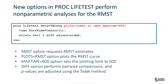In PROC LIFETEST, you can perform RMST analysis by specifying the RMST option in the PROC LIFETEST statement. When there are multiple groups, you can specify the STRATA statement to compute the RMST for each level of the strata variable. In addition to generating the survival plot, you can also request the RMST curve by specifying the PLOTS= option. You can use the MAXTIME option to set the upper limits of the time axis for these plots. You can use the DIFF option in the STRATA statement to compute the paired differences of the RMST among the groups, and use the ADJUST option to make multiple comparison adjustments to the p-values.